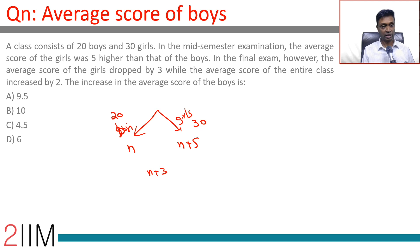In the final exam, however, the average score of the girls dropped by 3 while the average score of the entire class increased by 2. So average of the entire class is n plus 3. This would have gone to n plus 5.